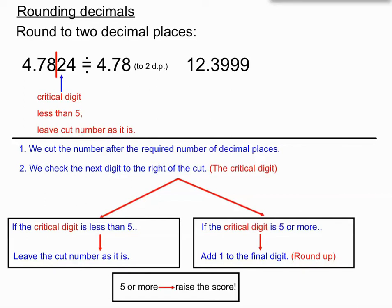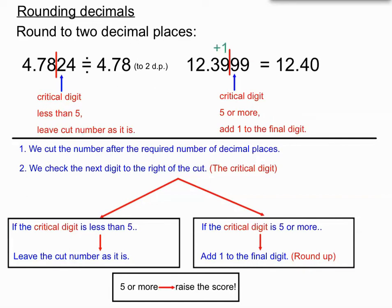12.3999 — I want to chop it after two decimal places. The critical digit this time is a nine, which is more than five, so I add one to the final digit. The final two digits are 39, and adding one gives 40. It's very important to put that extra zero in because we want the final number to be to two decimal places. So 12.3999 ≈ 12.40, rounded to two decimal places.